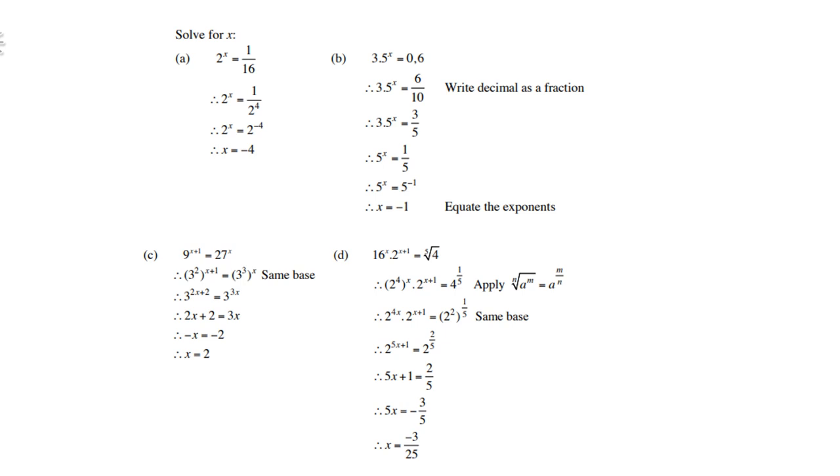Look at c, 9 to the power x plus 2 equals to 27x. So again, prime numbers. 9 is 3 squared, and 27 is 3 cubed, which then is 3 to the power 2x plus 2, and 3 to the power 3x. Therefore, 2x plus 2 equals to 3x. If you bring the 3x to the left-hand side and take 2 to the right-hand side, you get negative x equals to negative 2. Therefore, x equals to 2.